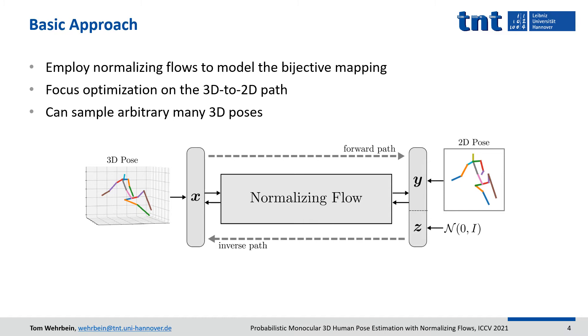At inference, given the 2D input, arbitrarily many 3D pose hypotheses can be generated by repeatedly sampling the latent variables from the prior distribution and computing the inverse path.